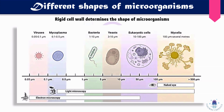Viruses and mycoplasma can only be seen in the electron microscope — they cannot be seen in the light microscope. Viruses are the smallest microorganisms, with a size of 0.05 to 0.1 micrometer. Mycoplasma, the smallest bacteria, has a size of 0.1 to 0.5 micrometer. The most common bacteria have a size range of 1 to 10 micrometers.